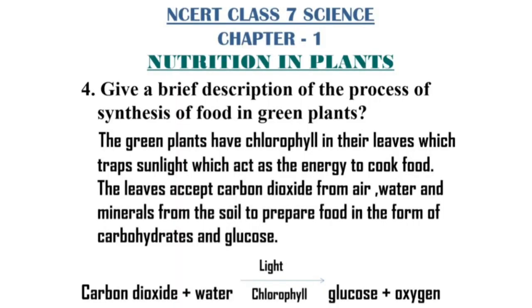We're nearly done with question answers. The fourth one is: give a brief description of the process of synthesis of food in green plants. The green plants have chlorophyll in their leaves which trap sunlight, acting as an energy source to produce food. The leaves take in carbon dioxide from the air, and water and minerals from the soil, to prepare food in the form of carbohydrates and glucose. It can be represented by the equation shown.